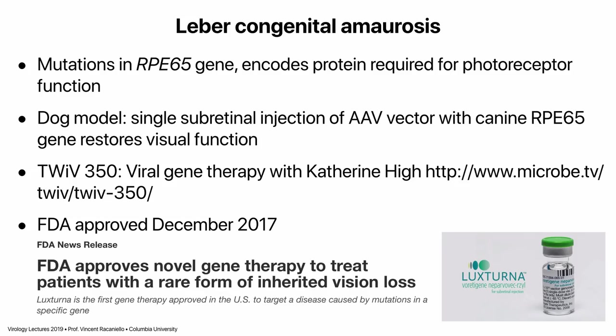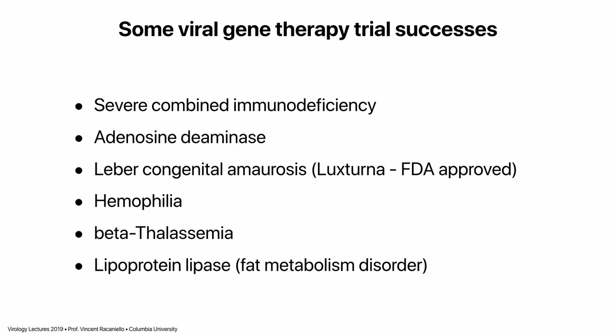In one disease called Leber congenital amaurosis, patients have mutations in the RPE65 gene in the retinal pigment epithelium, required for photoreceptor function. A single injection of AAV restored visual function in dogs, and the therapy was then put into humans and approved by the FDA in 2017 — it's called Lux Turna, developed in part by Katherine High at Penn. I interviewed her on TWIV episode 350. One of the kids who received this therapy said 'I saw my mother for the first time.' Other successes in monogenic therapy include SCID, ADA, hemophilia, beta-thalassemia, and lipoprotein lipase deficiency.